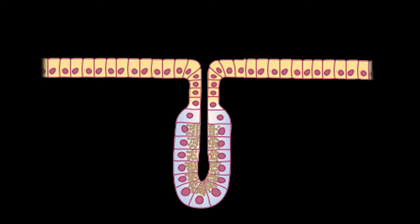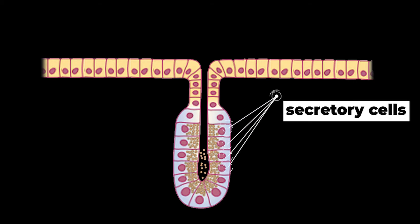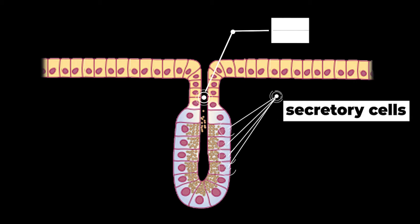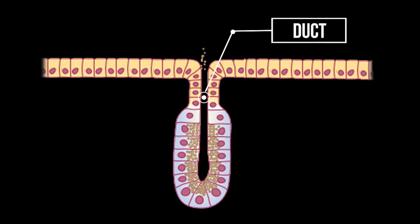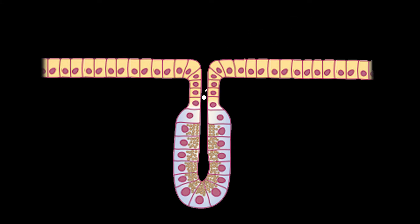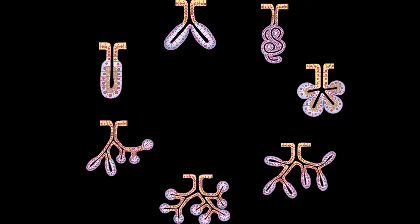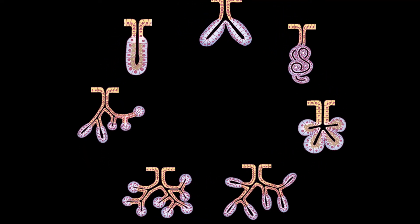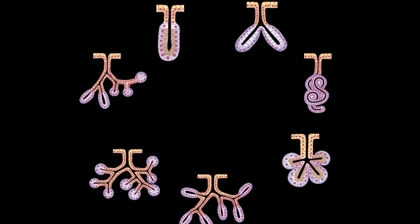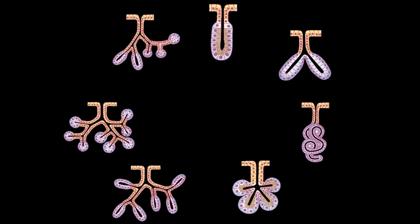A gland is simply an invagination of the epithelium where the cells at the very bottom perform the main secretion associated with that gland, and the cells above form a tube through which these secretions pour out to their destination. This tube is known as the duct of the gland, and it also serves to modify these secretions a little bit. These invaginations come in various shapes and sizes and are distributed across the body depending upon their location and the function they perform.